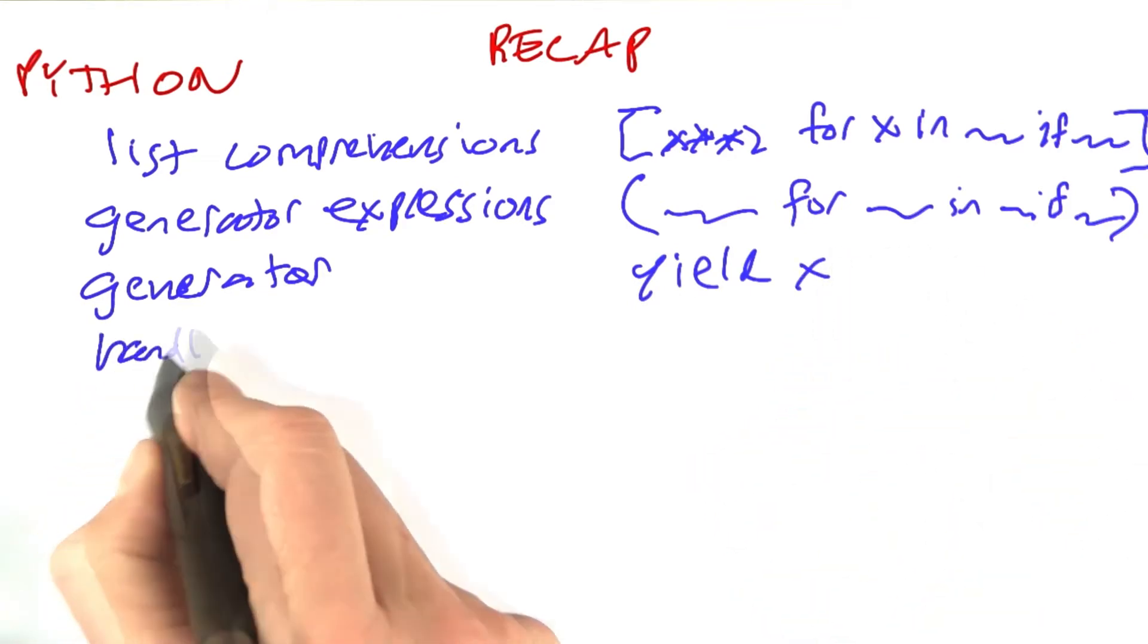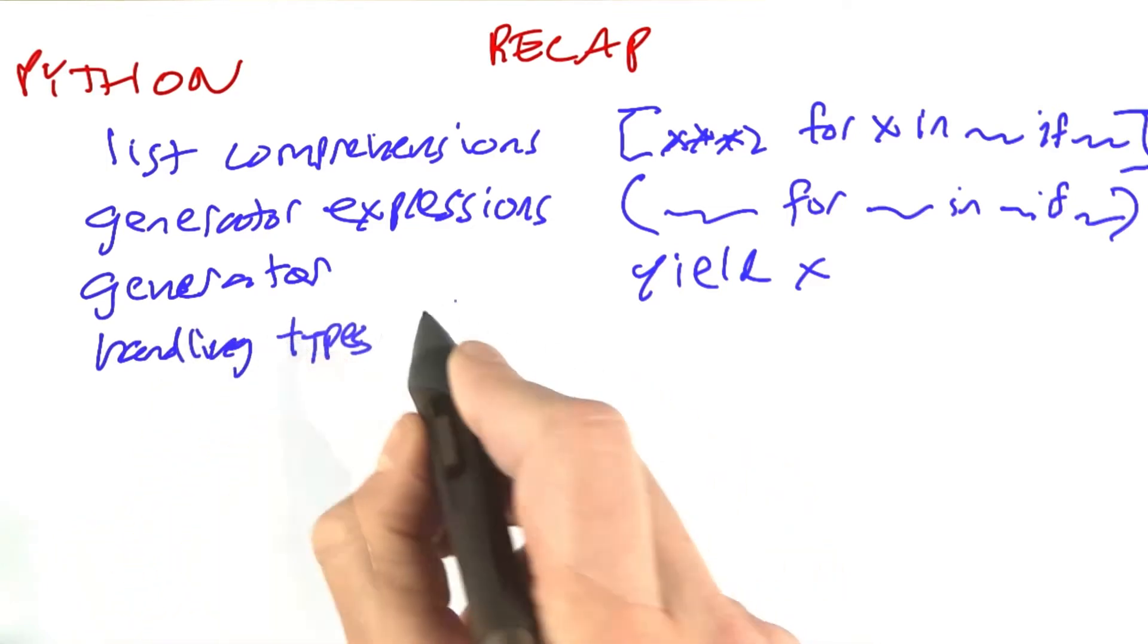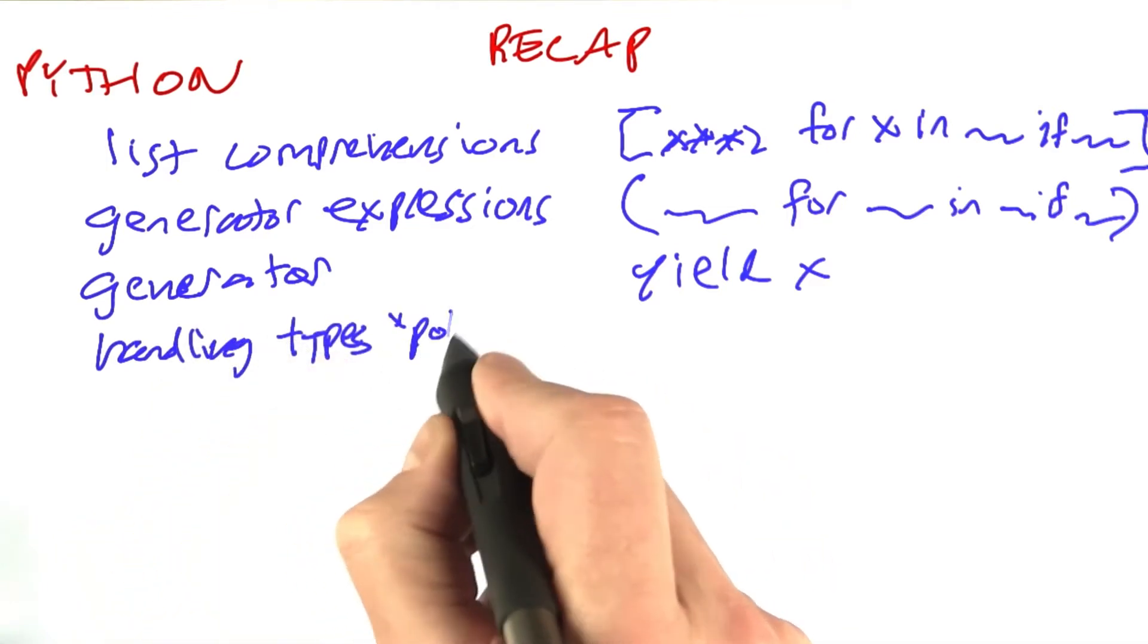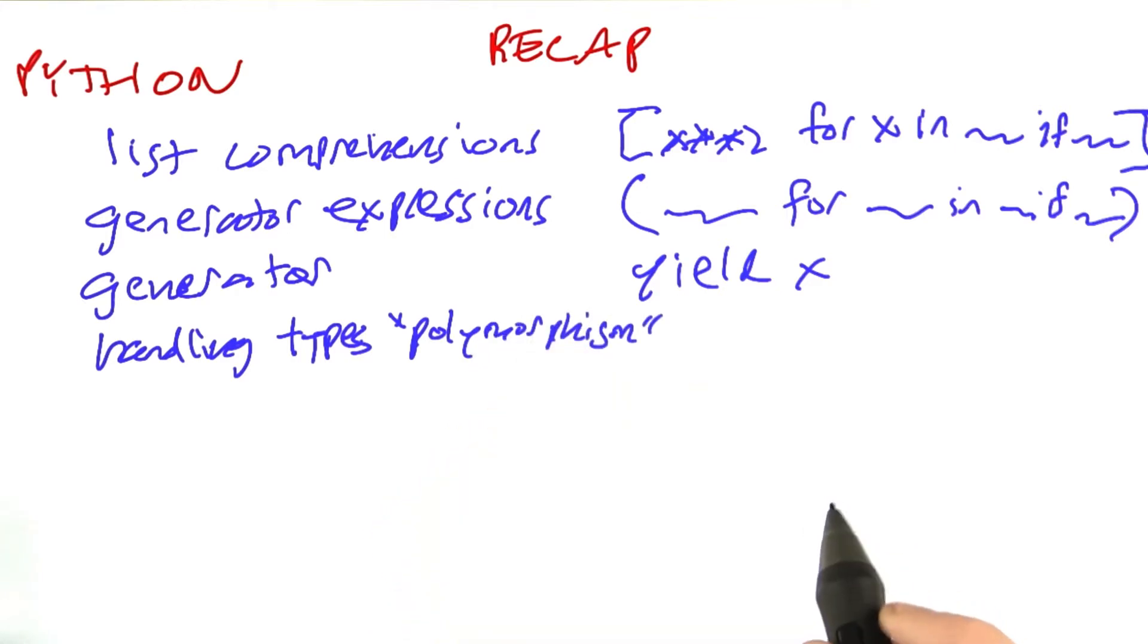We talked about the idea of handling different types, and this has the fancy name of polymorphism, meaning different forms.